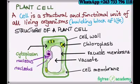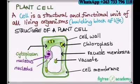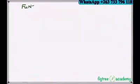This is the basic structure of a plant cell. You must always remember the cell wall, cell membrane, the chloroplast which is inside the cytoplasm, then the vacuole and the vacuole membrane, and then the nucleus.